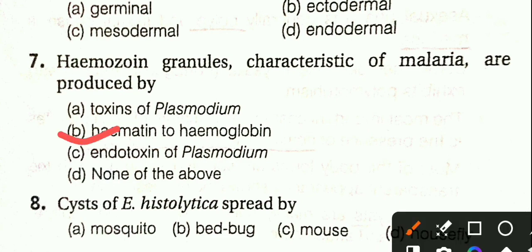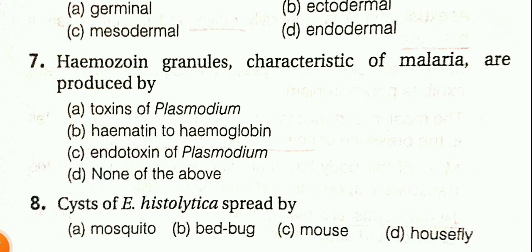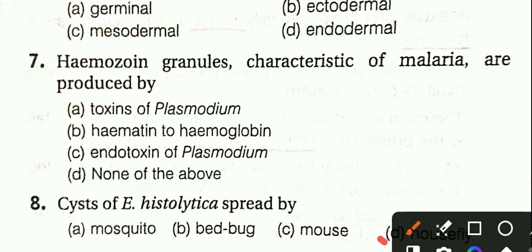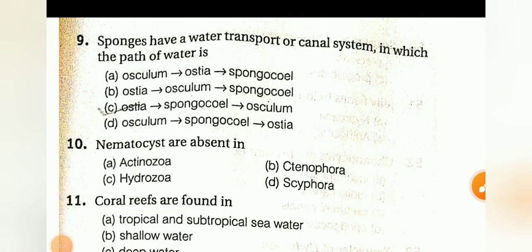Question 6: Taenia histolytica is transmitted by mosquito, bear, mouse, or housefly. The answer is housefly. The water transport canal system in Porifera — the path of water is...